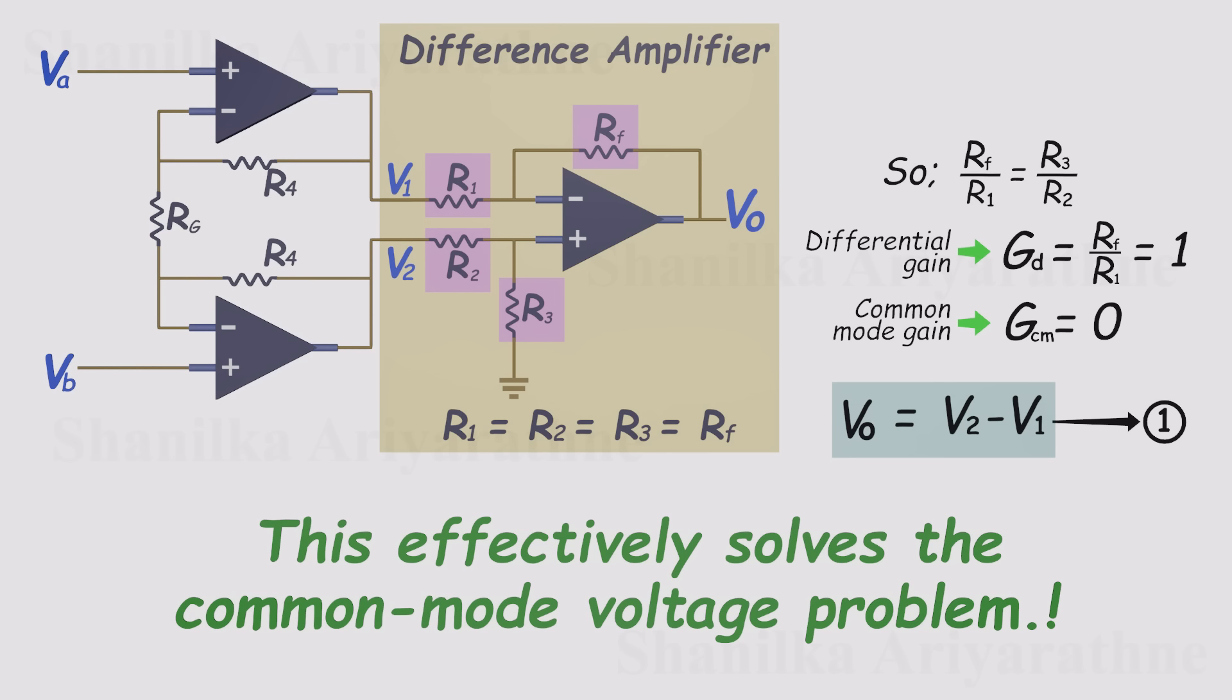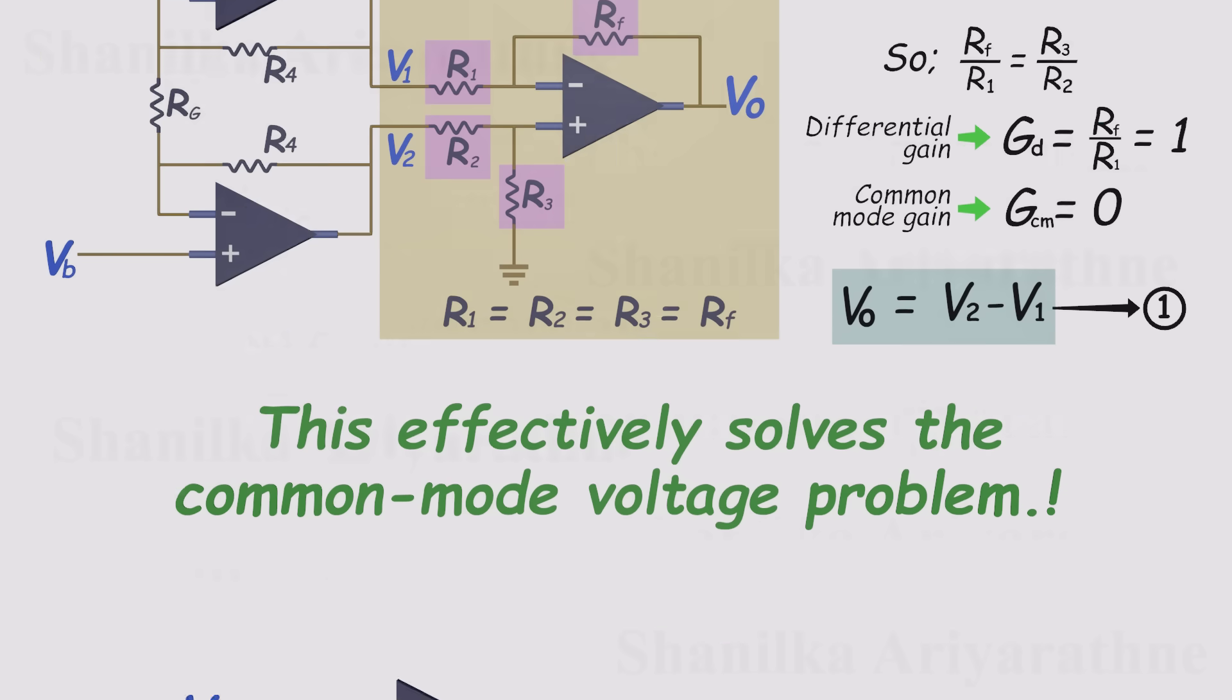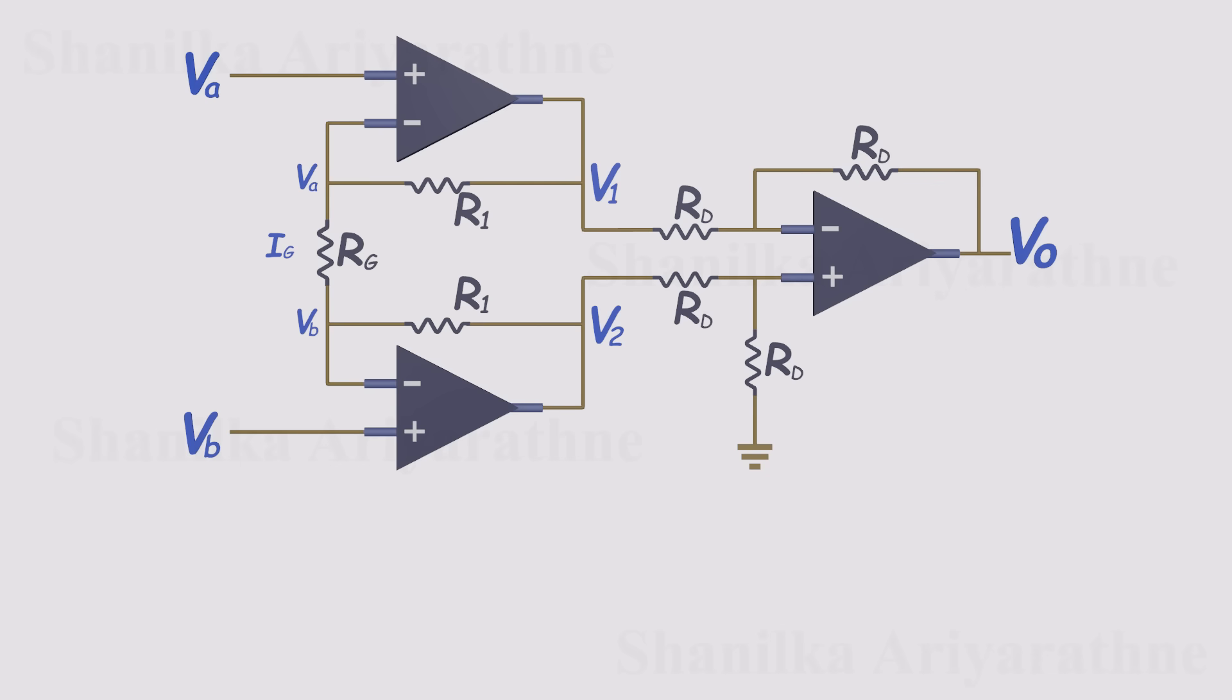That still leaves us with two more issues from the differential amplifier. Low input impedance, and the hassle of adjusting the gain with multiple resistors. So, how does the instrumentation amplifier fix these?